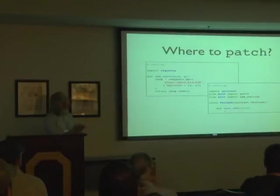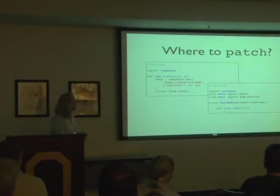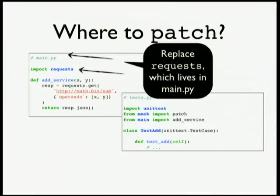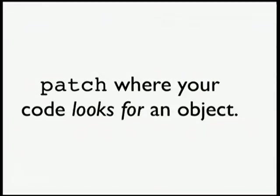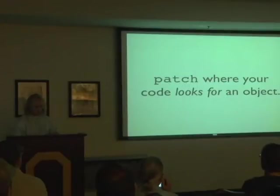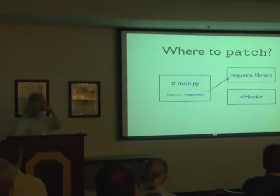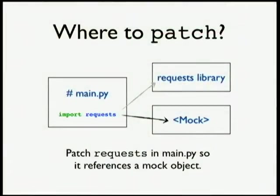Patch also seems to be the thing that's confusing for a lot of people. The problem is where to patch. Let's go back to this code example where I hit this API service. I'm going to split it up into a main module and a test module. What I really want to do is replace requests with a mock object. Requests, when you import it, is referenced from within the main module. You want to patch where your code looks for something — where it looks for an object. Typically, requests will reference the requests library, and when I use patch, from the perspective of the main method, requests will now point at a mock object.